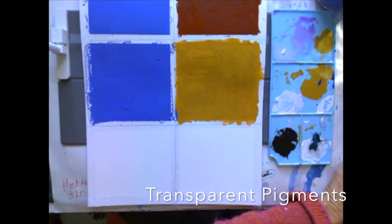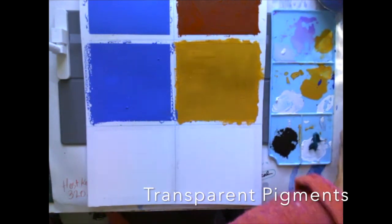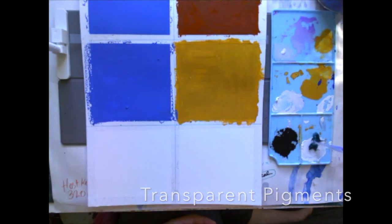With transparent pigments, such as the greens and the blues, to make them more opaque, you must add white to them.